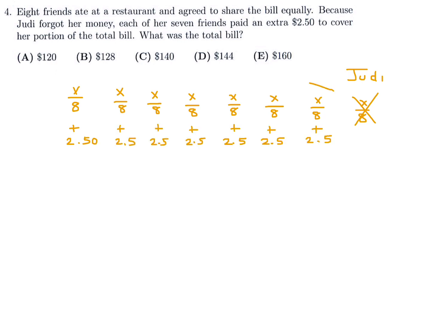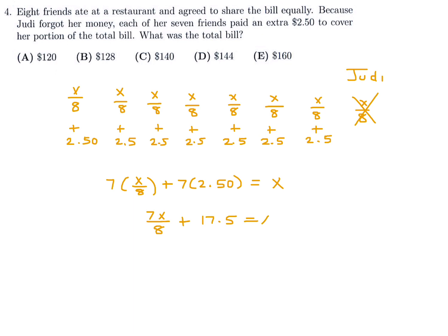The equation is: 7 times (X/8) plus 7 times 2.5 equals X. This simplifies to 7X/8 + 17.5 = X. Bringing the X's over gives 17.5 = X/8. Multiplying through by 8 gives 35 times 4, so 140. The original bill was $140. Number 4, therefore, is C.